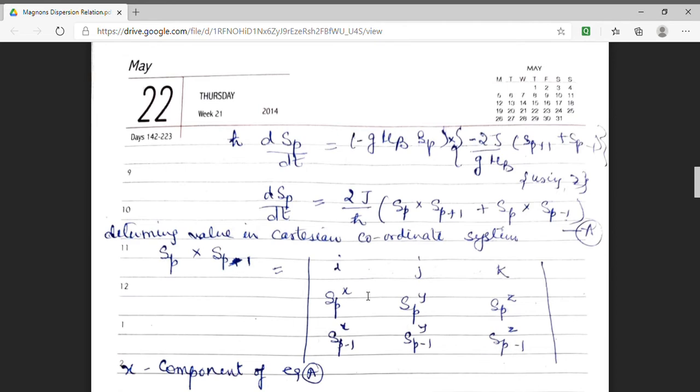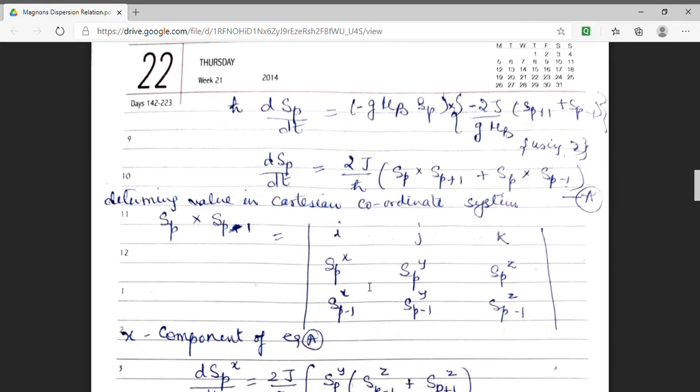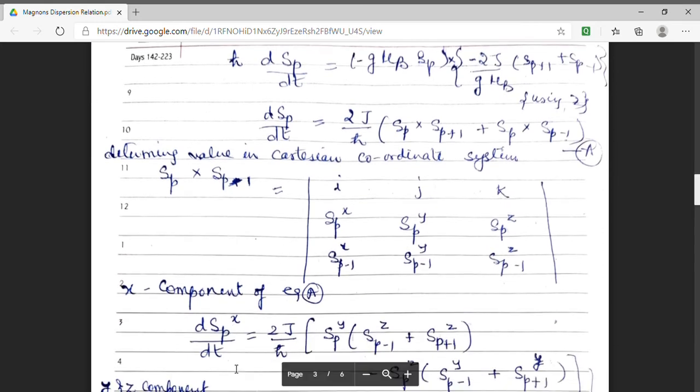Here, I am showing the cross product of spin sp and sp minus 1. Now, I am finding the expression. Now, I am finding the x component of expression. That means, I have determined d spx upon dt. Constant factor is 2j upon h cross. And the x component comes out to be, from here, spy multiplied by sp minus 1z minus spz, sp minus 1y.